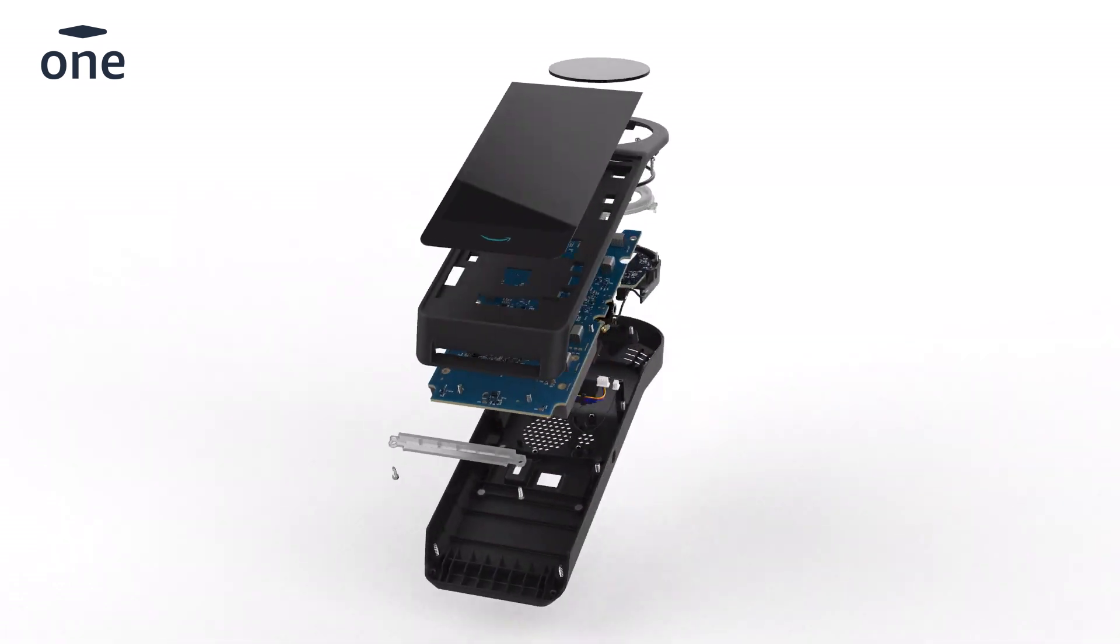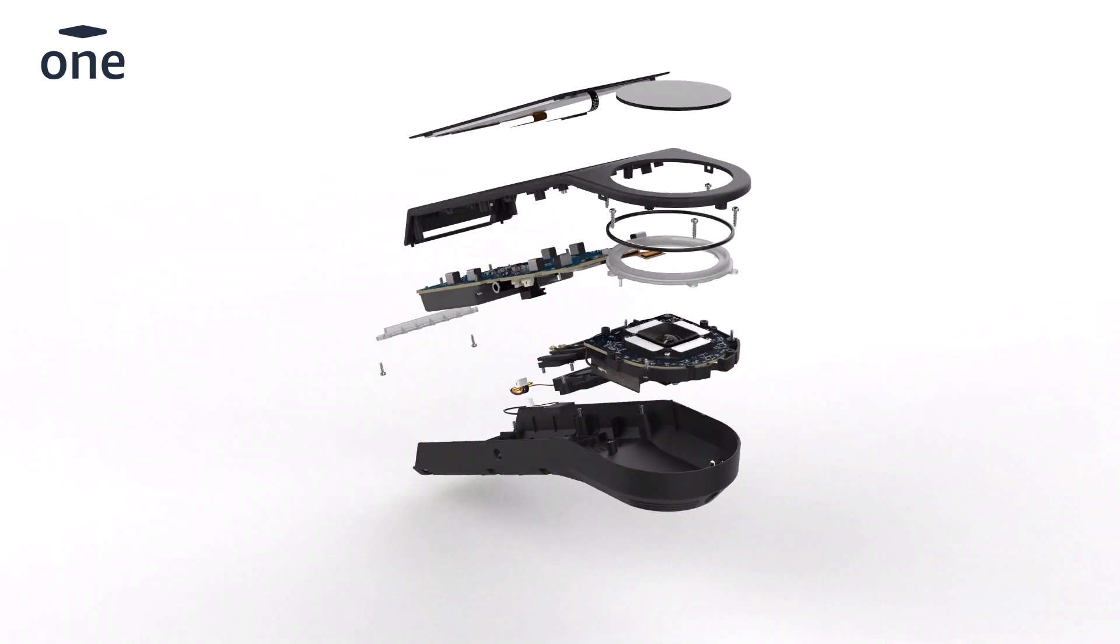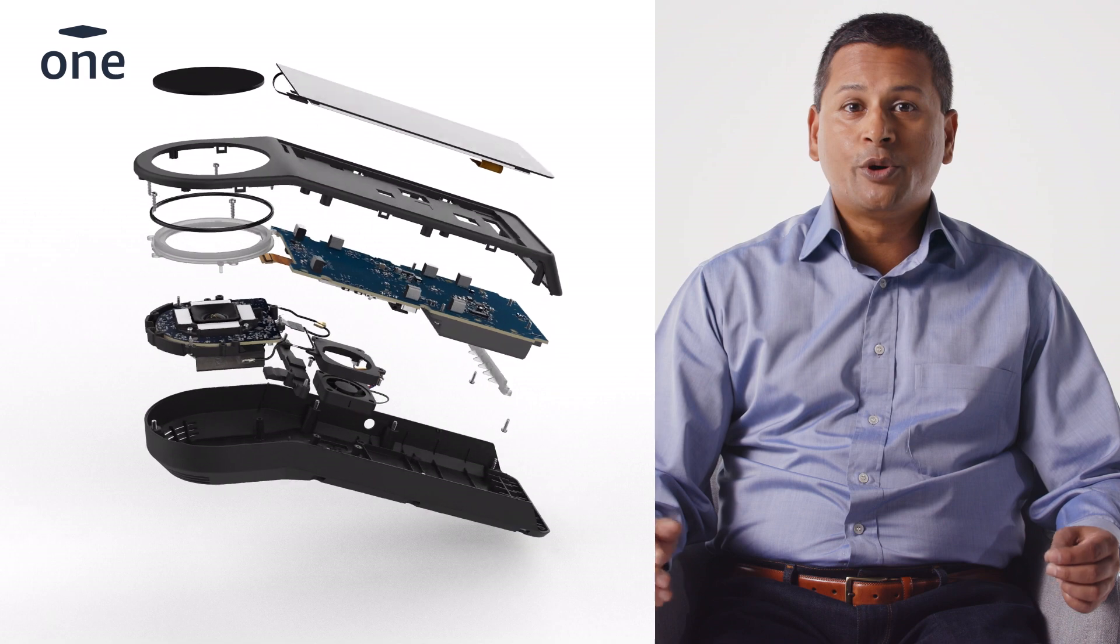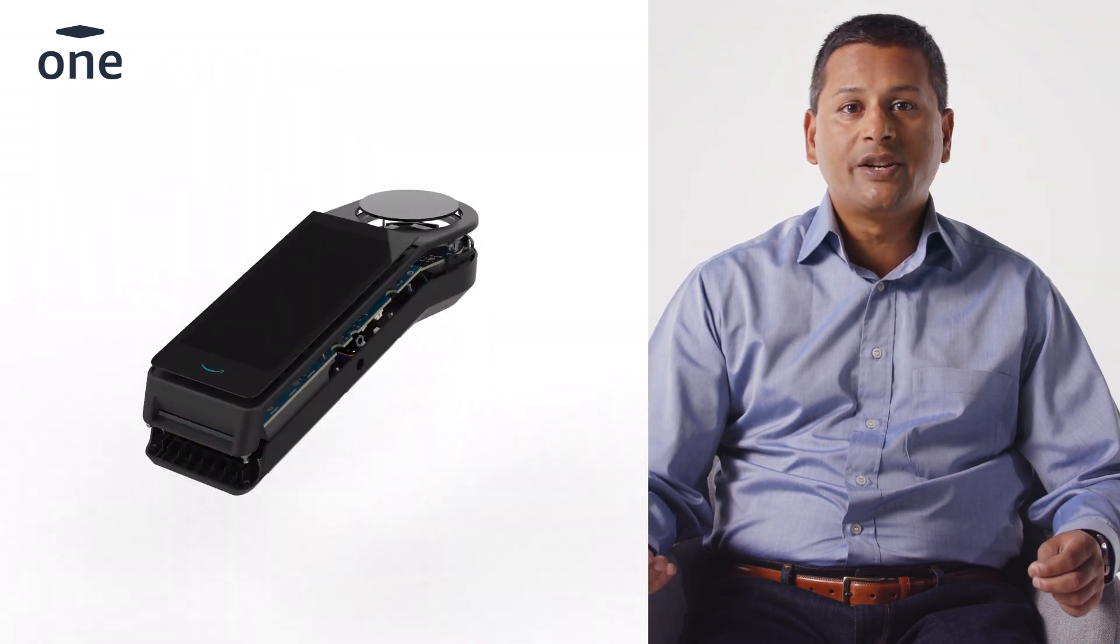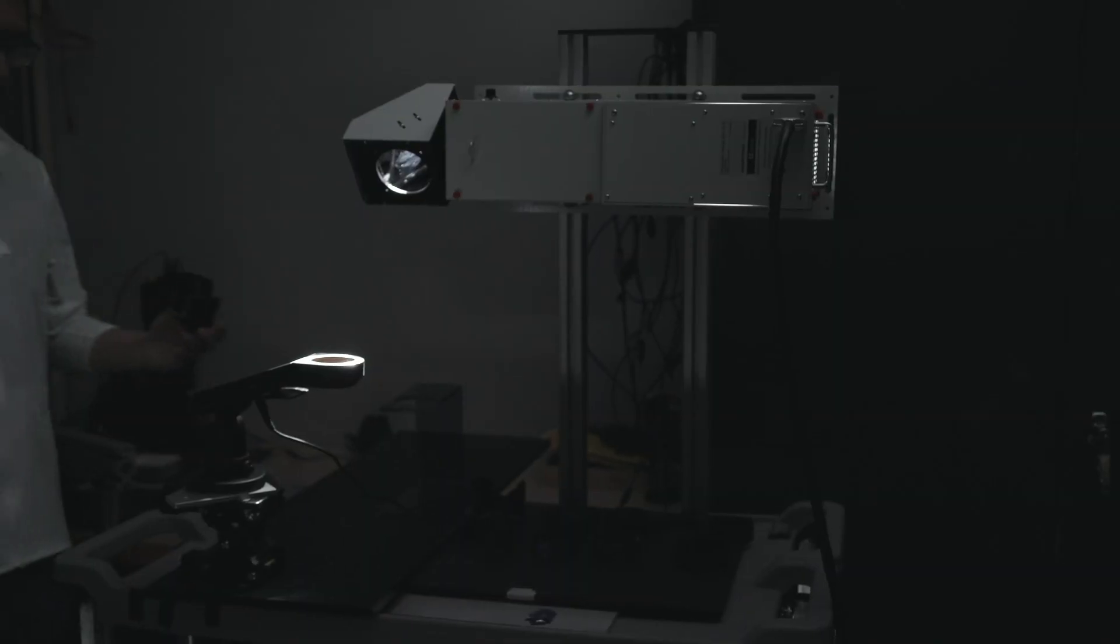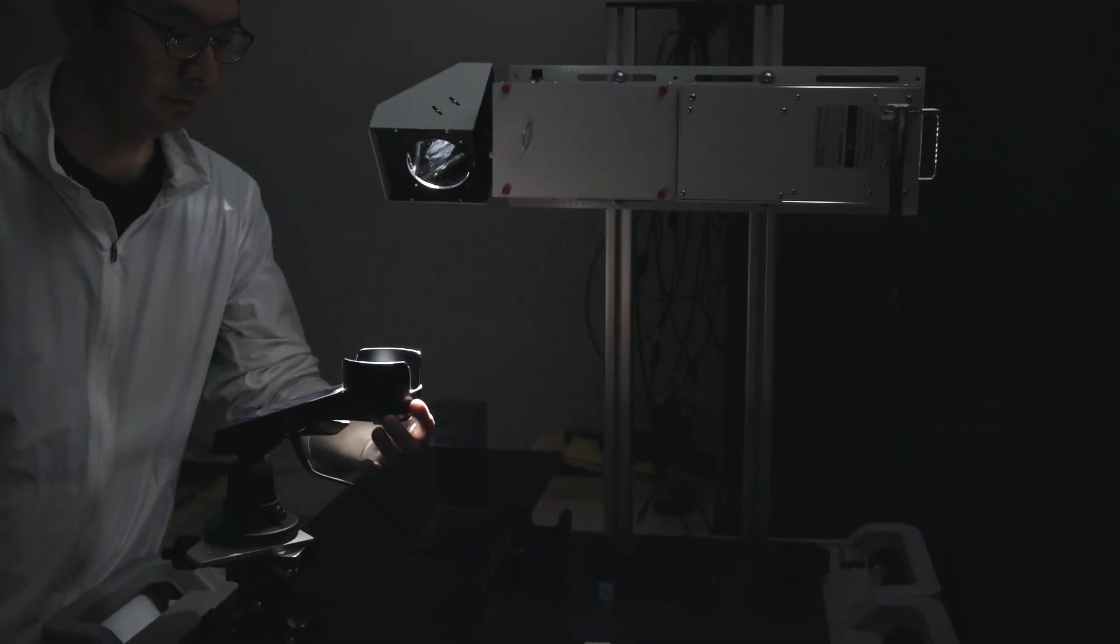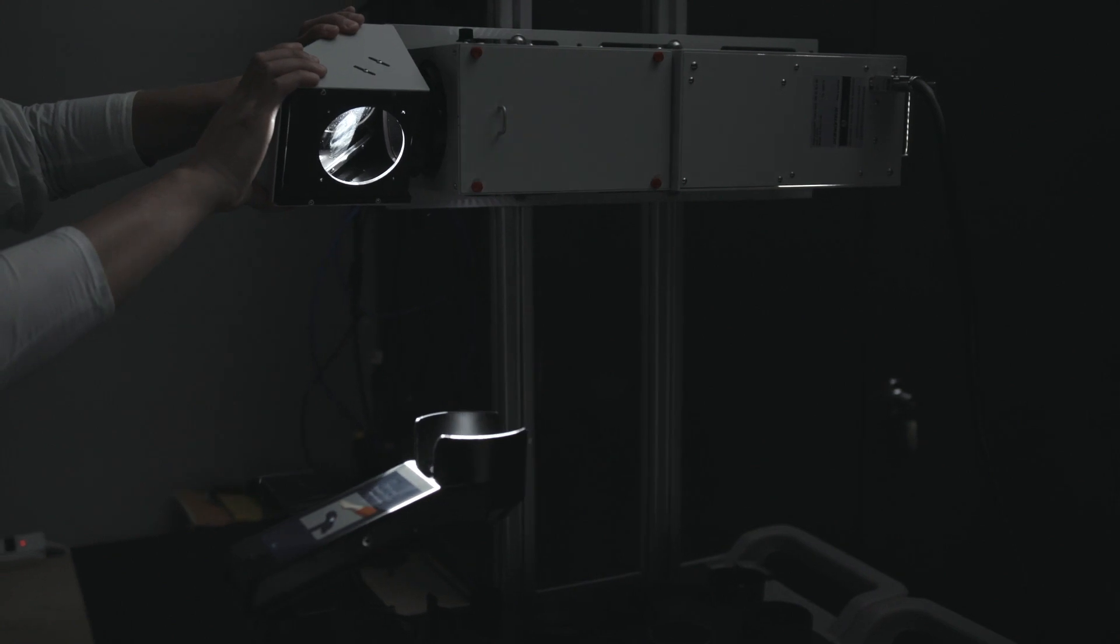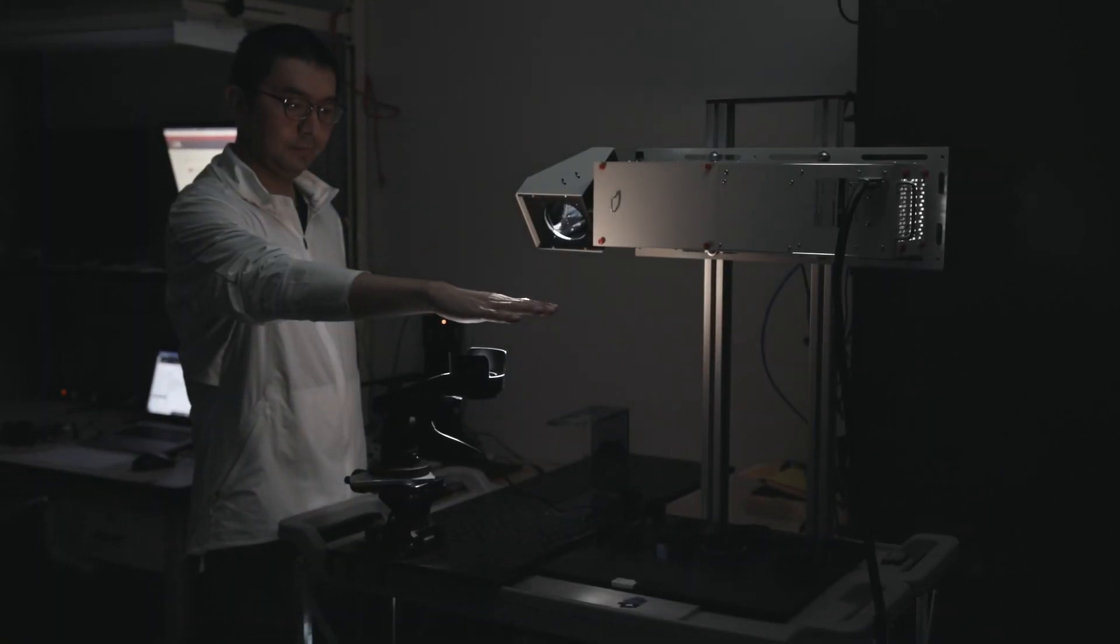Then the question was, how do we assemble the right set of skills necessary for it? The first one was the hardware or the device itself. In order to capture the right kind of details from the palm as well as the subsurface images of the vein, it involved very sophisticated camera and optics that we needed to build in order to get to the right level of sophistication.